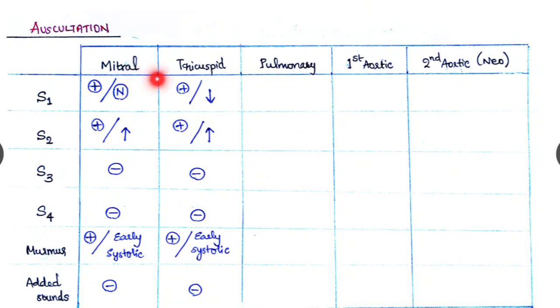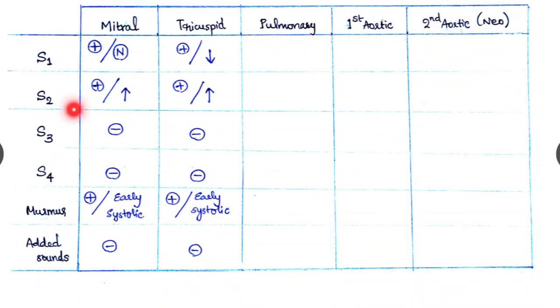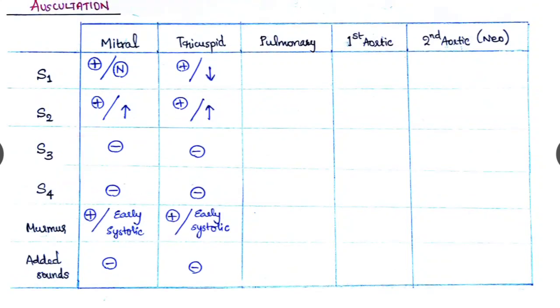And like mitral, tricuspid, pulmonary, first aortic, and neo-aortic or the second aortic area, we have to tabulate against this: S1, S2, that is the first heart sound, second heart sound, third one S3, S4, any murmurs or any added sounds. And we have to tabulate like S1, it is present in the normal in mitral, or like S1 is present but reduced in tricuspid, likewise we have to tabulate here.